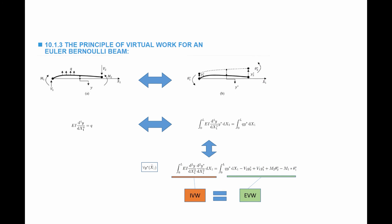The left-hand side is termed the internal virtual work — it's the work done by the stresses during the application of the virtual displacement y star. The right-hand side is called the external virtual work, which is the work done by the external forces during the application of y star. That external virtual work consists of different components: the first from the distributed load q, and the others from the concentrated forces and moments acting on the beam. This equation — internal virtual work equal to external virtual work — is equivalent to the equilibrium equation.